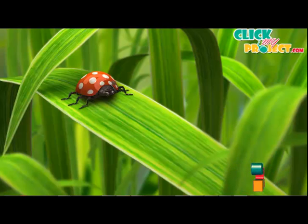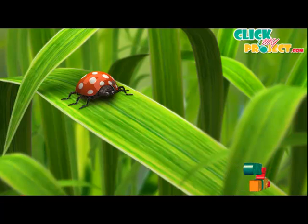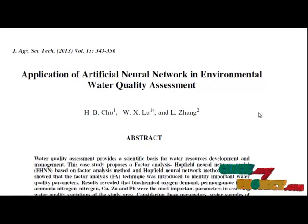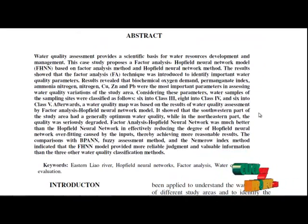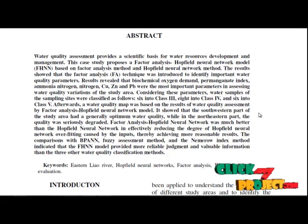Welcome to clickmyproject.com, where we discuss the project about application of artificial neural networks in environmental water quality assessment. In our proposed work, we will find the quality of the water and check whether the water is drinking water or non-drinking water with the help of a neural network.